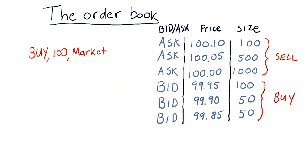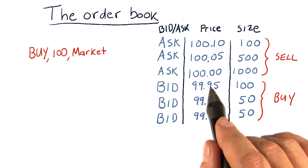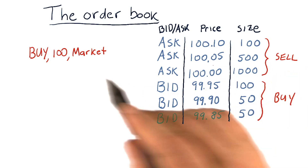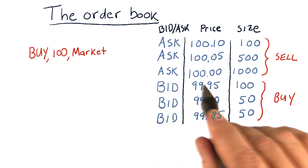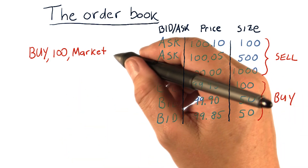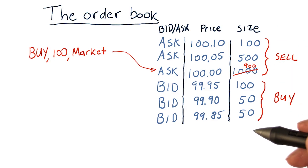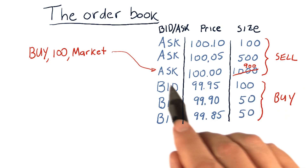A market order comes in to buy 100 shares at market. We can see that there are 1,000 shares that people are willing to sell. The exchange has to give the best price to the client, so we give the client 100 shares at this price. The order comes in, 100 shares go away, and now the order book shows 900 shares available instead of 1,000. The execution price is $100.